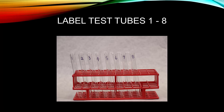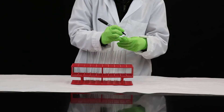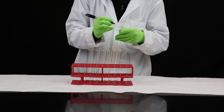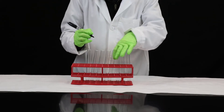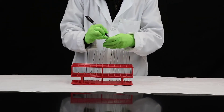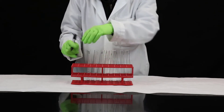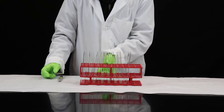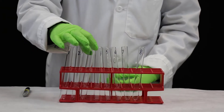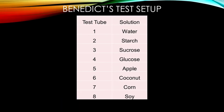Label your test tubes one through eight and place them in the test tube rack. Here is the table of solutions we will be using: 1. Water, 2. Starch, 3. Sucrose, 4. Glucose, 5. Apple Juice, 6. Coconut Water, 7. Corn Juice, 8. Soy Milk.